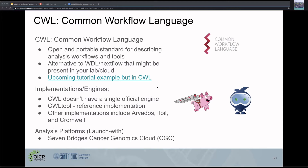The implementations or engines that you need to actually run a CWL workflow are what actually understand the CWL language so that the machine can understand what you'd like to run. CWL doesn't officially have a single official engine, but CWL tool is the reference implementation. Other implementations include Arvados, Toil, and Cromwell, which also support CWL.